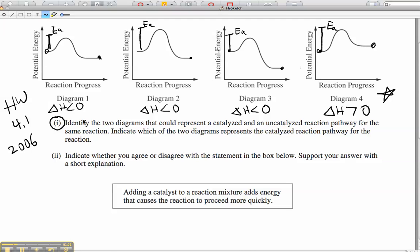So let's look at the first question. It says identify the two diagrams that could represent a catalyzed and uncatalyzed reaction pathway for the same reaction. Indicate which of the two diagrams represents the catalyzed reaction pathway for the reaction. So in order to have the same reaction, you have to have the same delta H.